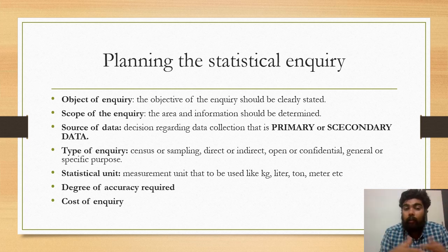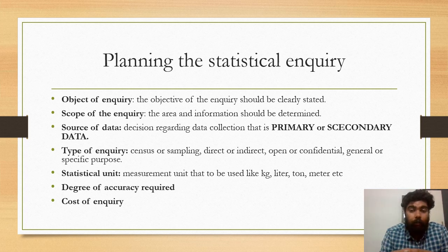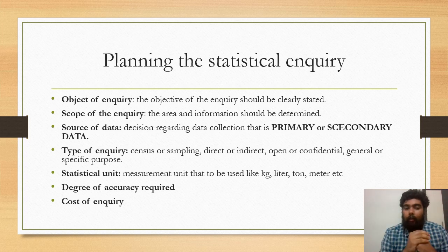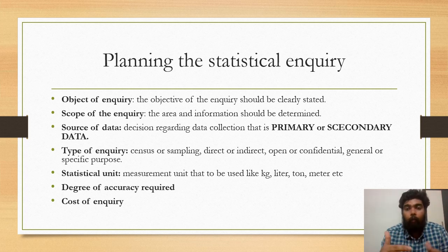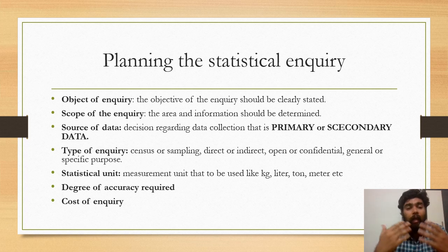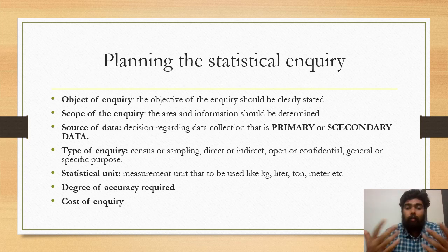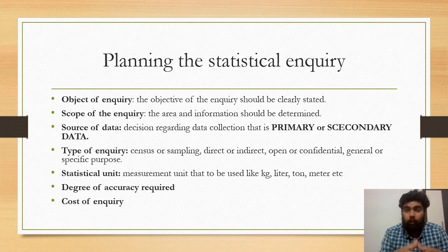To summarize the planning steps: first, define the objective; second, determine the scope of the enquiry and the area; third, identify the source of data — is it primary or secondary? Fourth, determine the type of enquiry: census or sampling, direct or indirect, open or confidential, general or specific. Fifth, define the statistical units — measurement units such as kilograms, liters, and meters. Sixth, determine the degree of accuracy. Finally, consider the cost of enquiry.